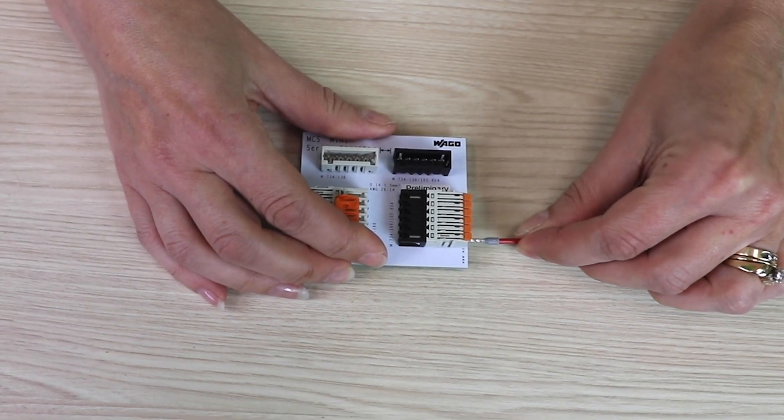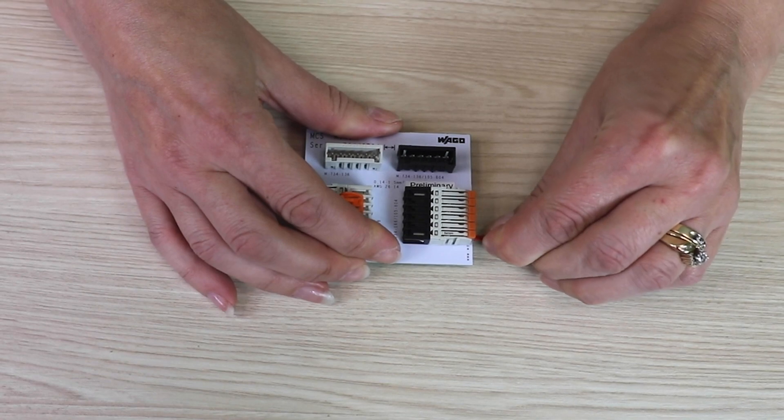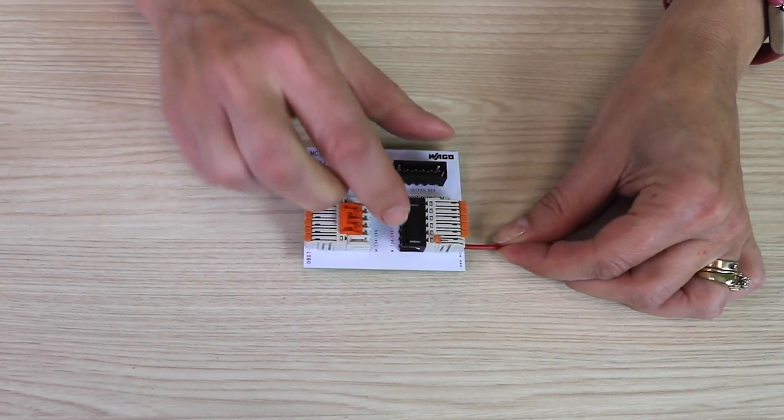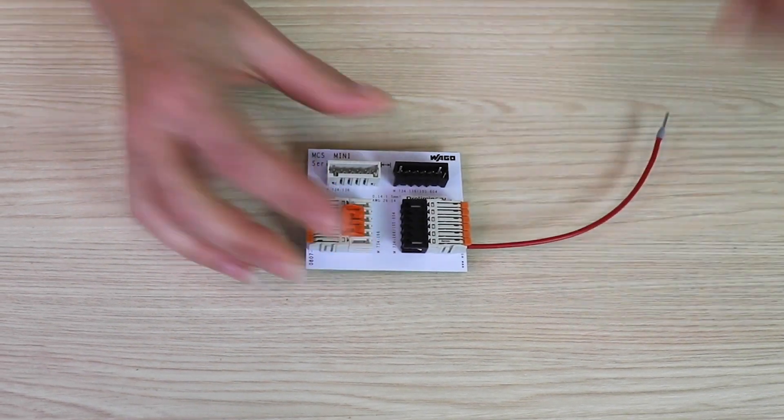Solid or ferruled wires can be inserted by simply pushing them into the product. By opening the lever, stranded wires can easily be inserted.